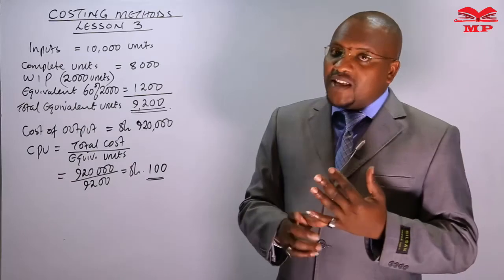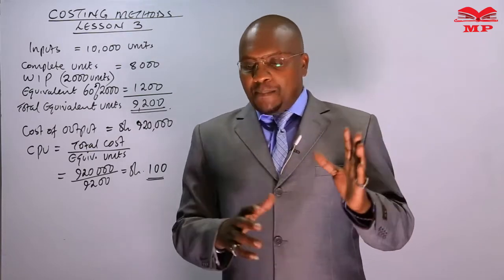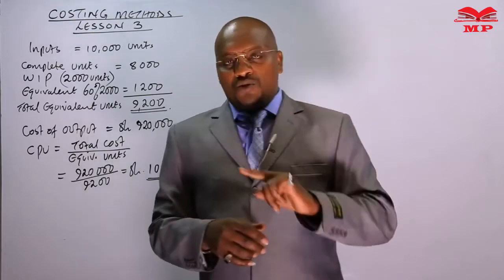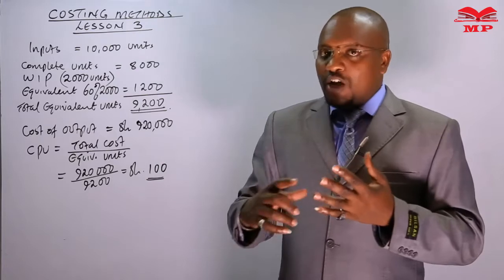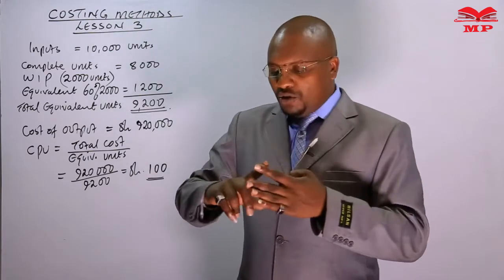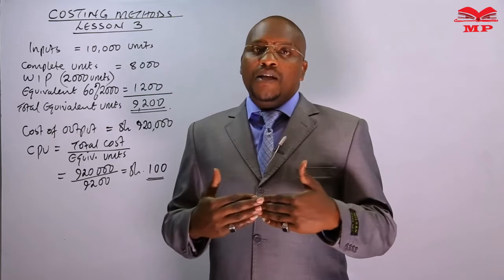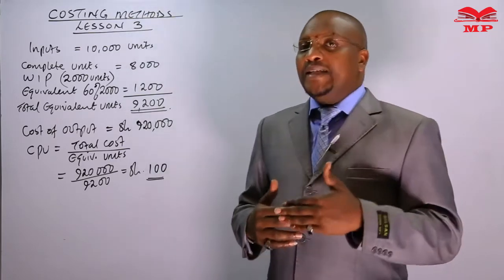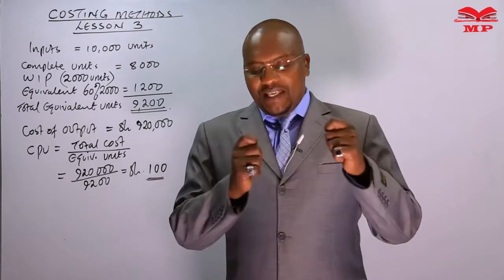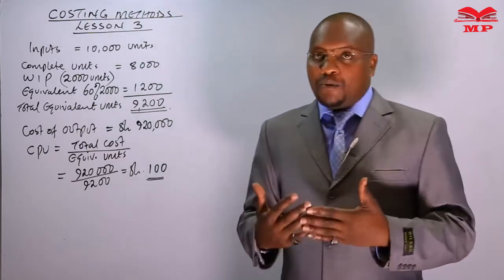The transfer-in cost represents the cost of materials or products transferred from a previous process. For example, in process two, the costs incurred in process one to complete units that are then transferred to process two is called the transfer-in cost. In this process, we will have some materials added, and conversion costs such as labor and overheads. The transfer-in cost happens at the beginning of the process.